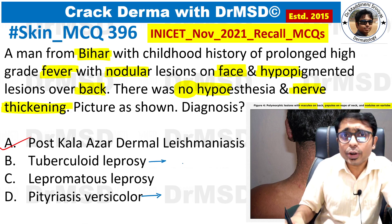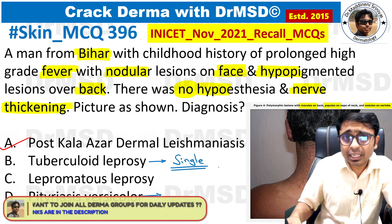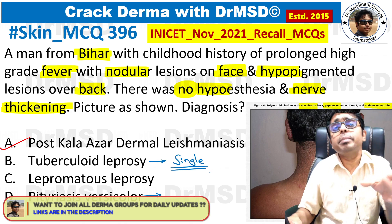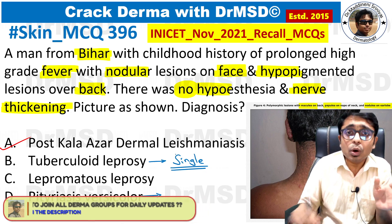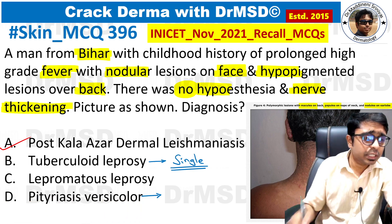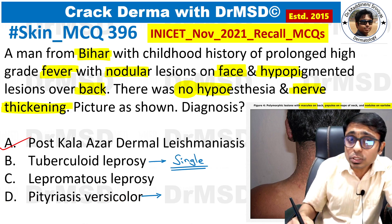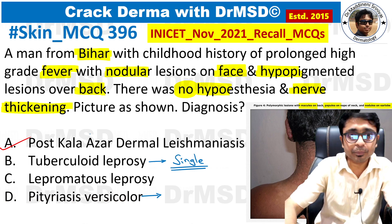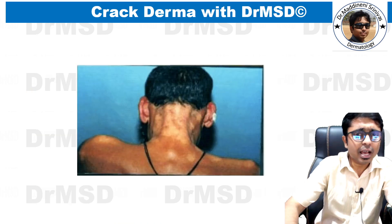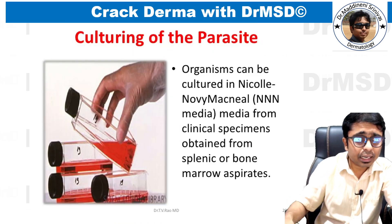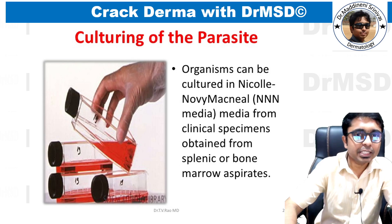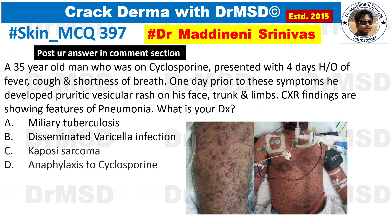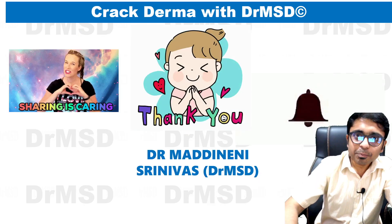In tuberculoid leprosy, patients typically present with a single annular erythematous lesion along with nerve thickening or hypoesthesia over the patches. In this question, options A and C are the most important differentials to consider, and this is how you differentiate both conditions. I hope this explanation was helpful — please hit the like button, subscribe to the channel, and happy learning!